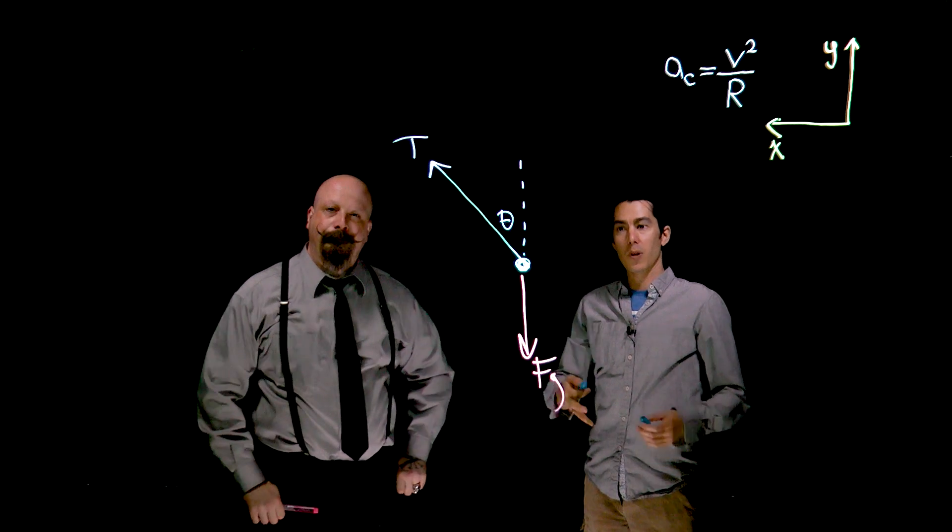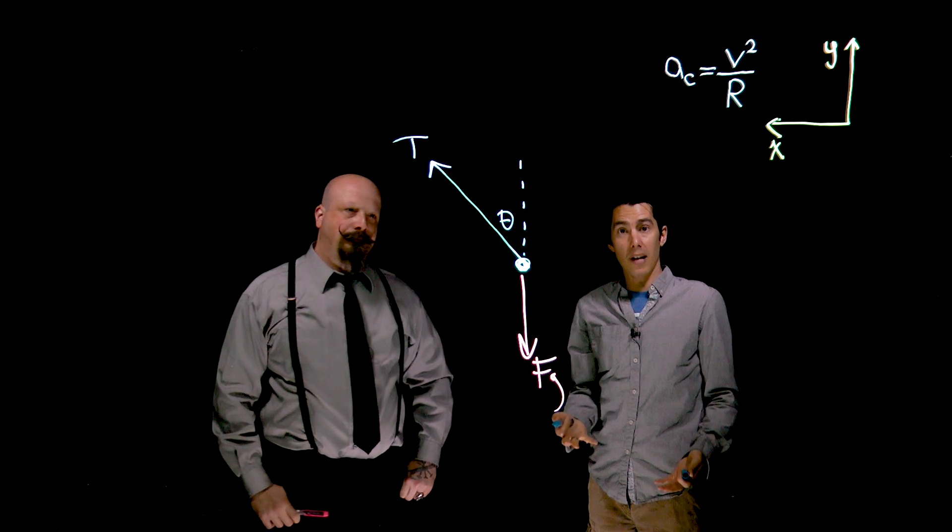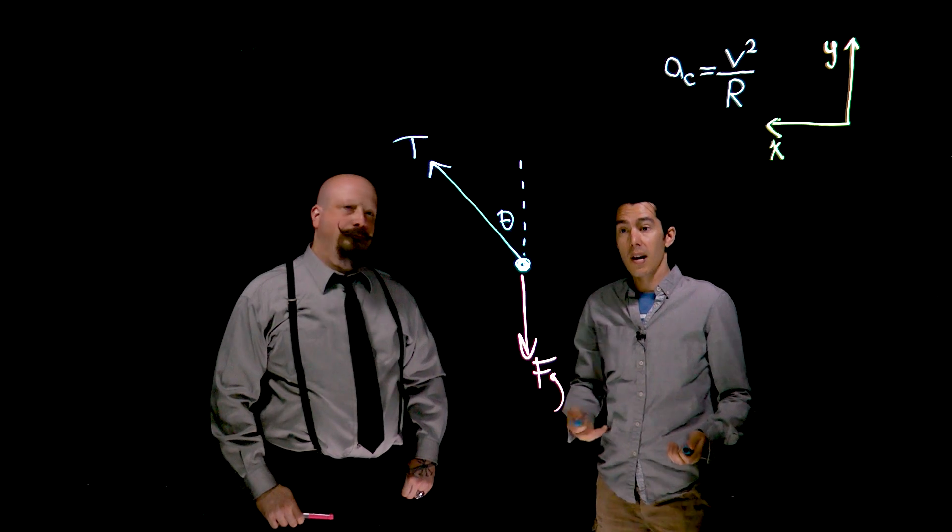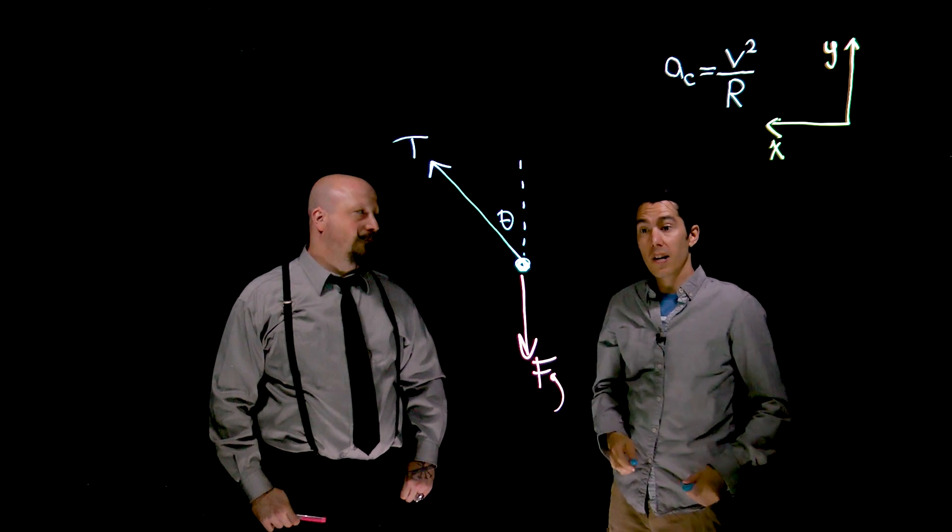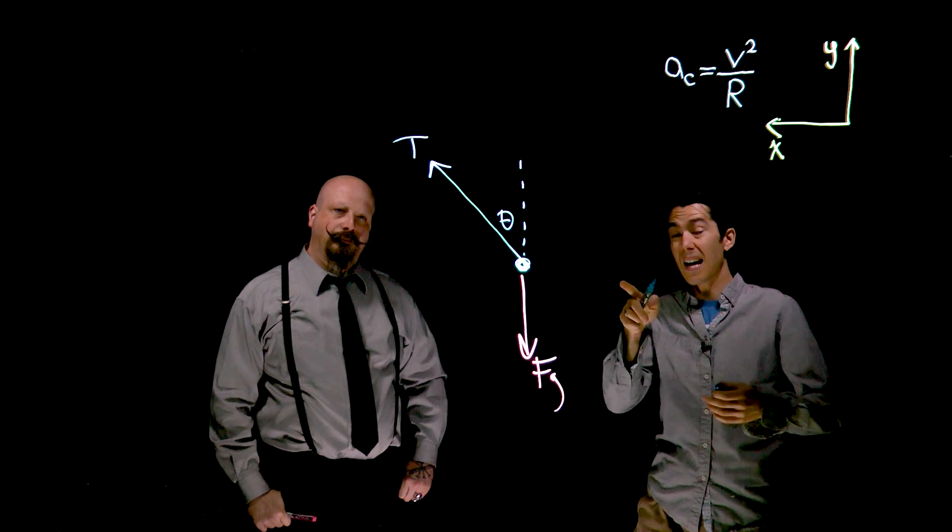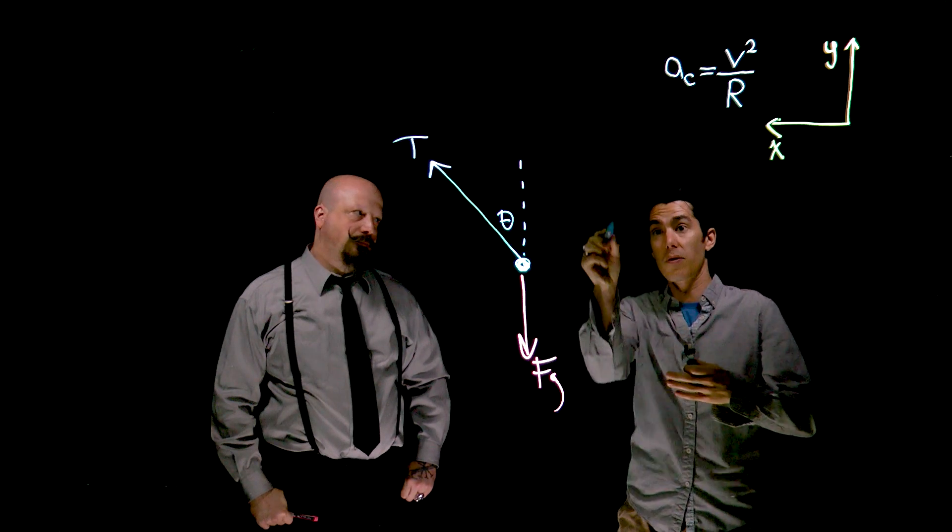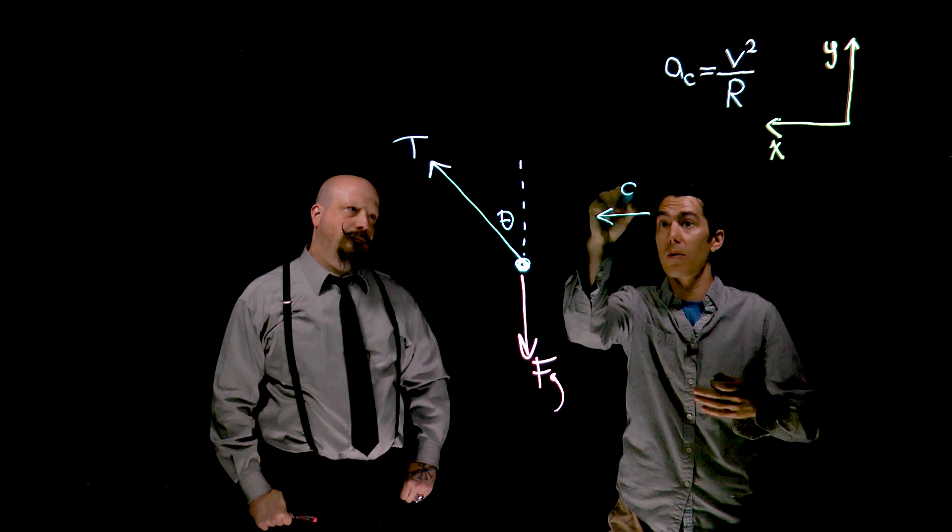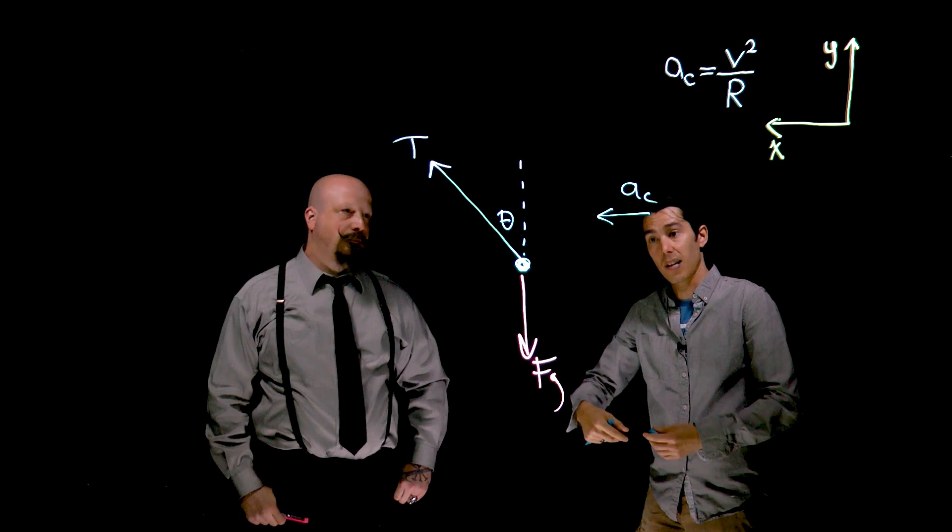With any free body diagram, the goal is to list all the forces acting on the ball. It's just these two. Now, centripetal acceleration v squared over r is the response, is the motion, and that's traveling always to the center of the circle. So we could say the centripetal acceleration is pointing in this direction at that instant of time.